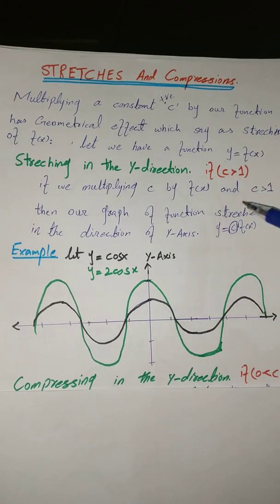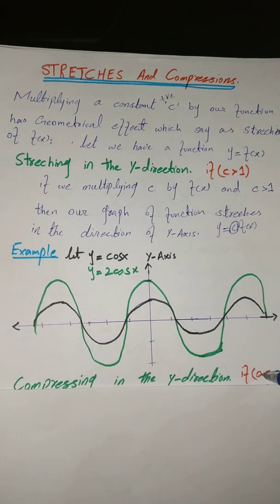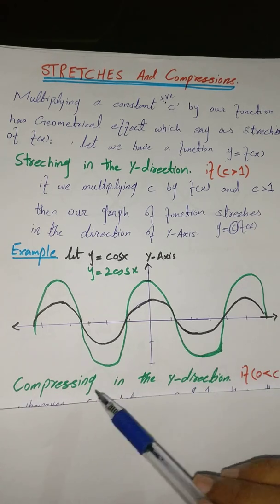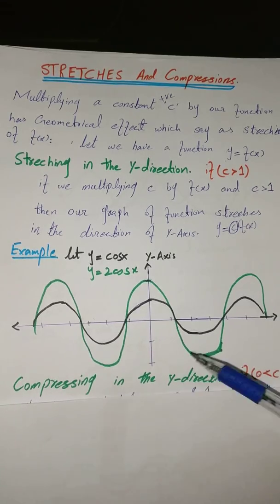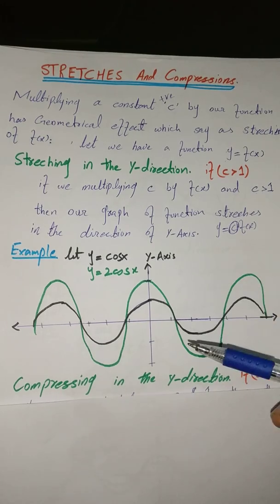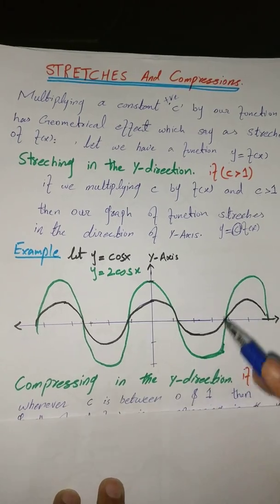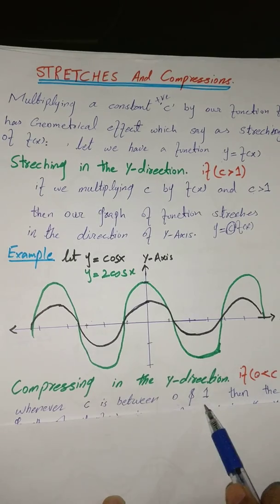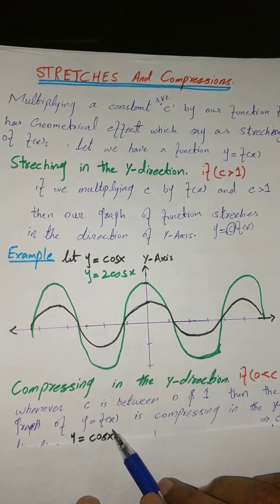When C is between 0 and 1 — since C is positive, C must be greater than 0 — our graph will be compressed in the Y-axis direction. So whenever C is between 0 and 1, the graph of Y = f(x) is compressed in the Y direction.